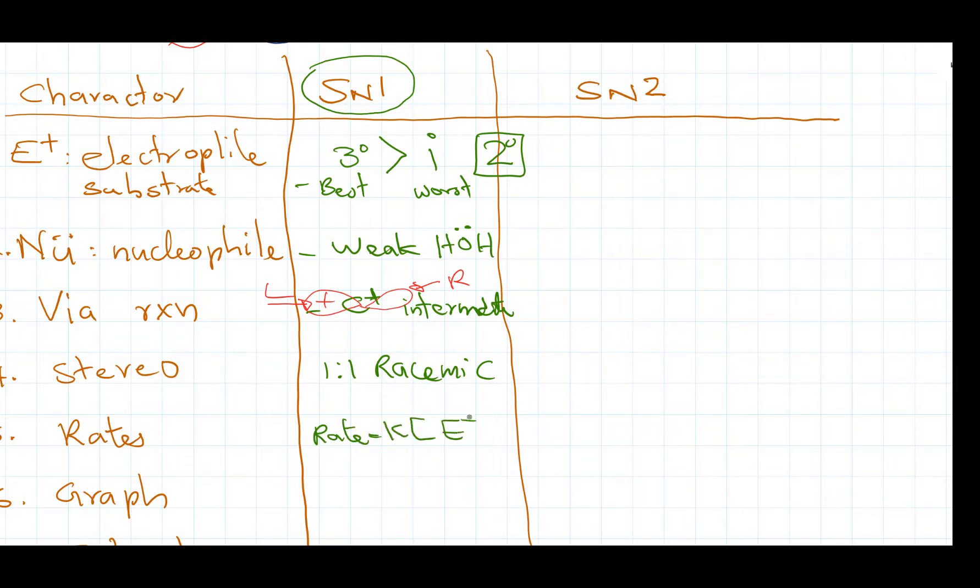Now the rate SN1 will have unimolecular. So that would be K times the concentration of electrophile.